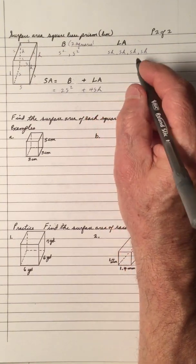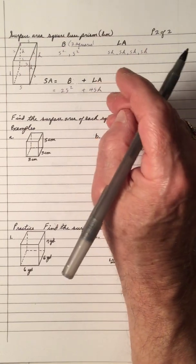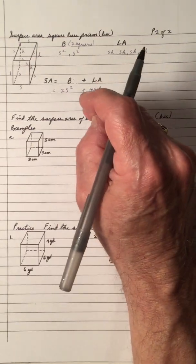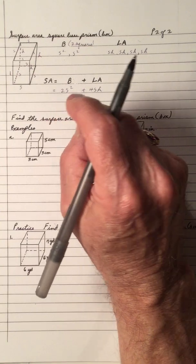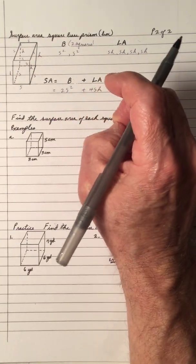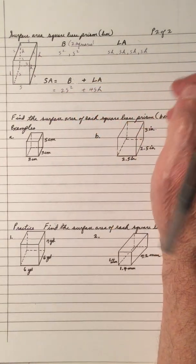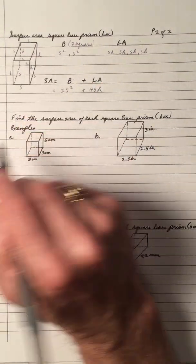So a little bit easier to work out because the bottom is a square. So it's not like length times width doubled, or width times height doubled, and length times height doubled, but this is easier because it's a square base.